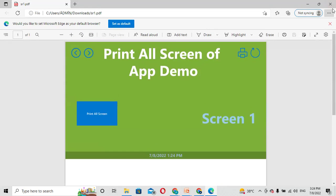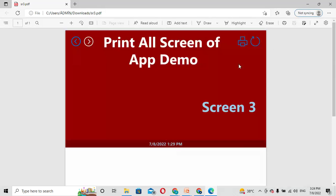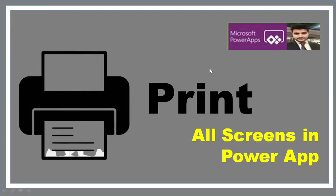Now you can see all my screens are here in the PDF: my first screen, my second screen, and my third screen. That is how I achieved printing all screens in a single click. This is a workaround I found. My next goal is to print all screens into a single PDF, as right now we create multiple PDFs. I'll try to find another approach for a single PDF download.